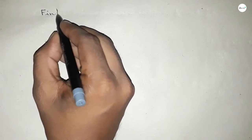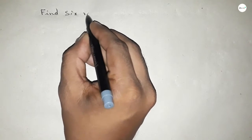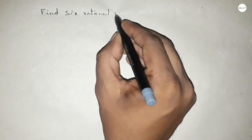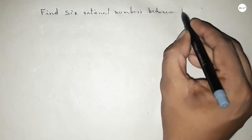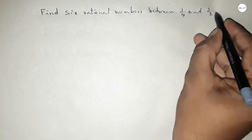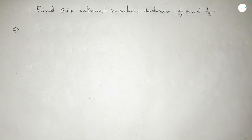Hi everyone, welcome to Shz Classes. Today in this video we have to find six rational numbers between 1 over 4 and 1 over 2. So let's start the video. First of all, write down here the given number 1 over 4 and 1 over 2.